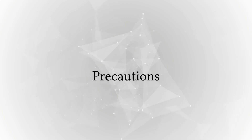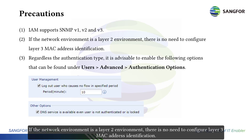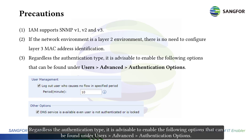Precautions: IAM supports SNMP v1, v2, and v3. If the network environment is a layer 2 environment, there is no need to configure layer 3 MAC address identification. Regardless of the authentication type, it is advisable to enable the following options that can be found under Users > Advanced > Authentication Options.